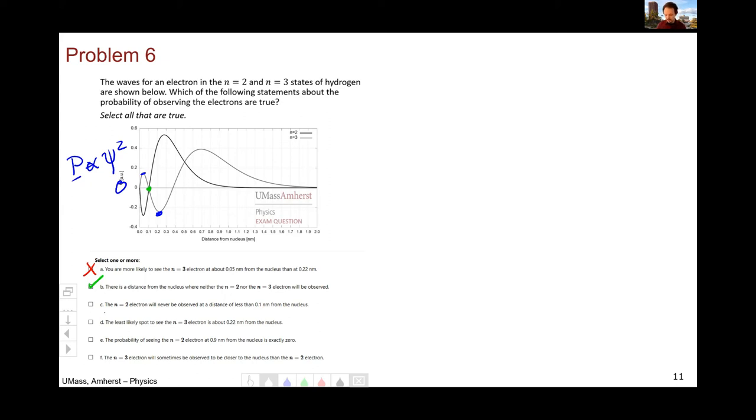The n equals two electron will never be observed at a distance of less than 0.1 nanometers from the nucleus. That is not true. We can see the n equals two wave has some probability, has some value less than 0.1. The least likely spot to see the n equals three is about 0.22. And that is also going to be false. The wave function has some value there. In fact, as we already saw, it's more likely than the 0.05. The probability of seeing the n equals two at 0.9 is exactly zero. So let's go out to 0.9 and have a look at what's going on. And nope, that's not zero. So that's okay.